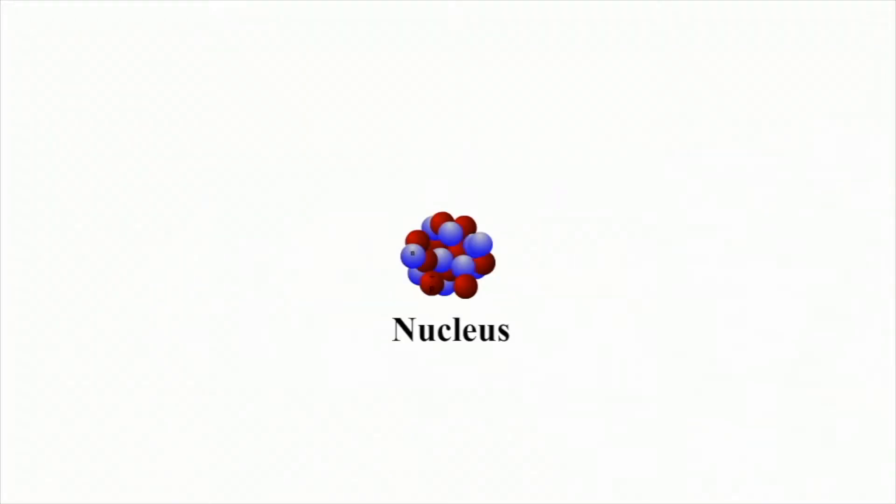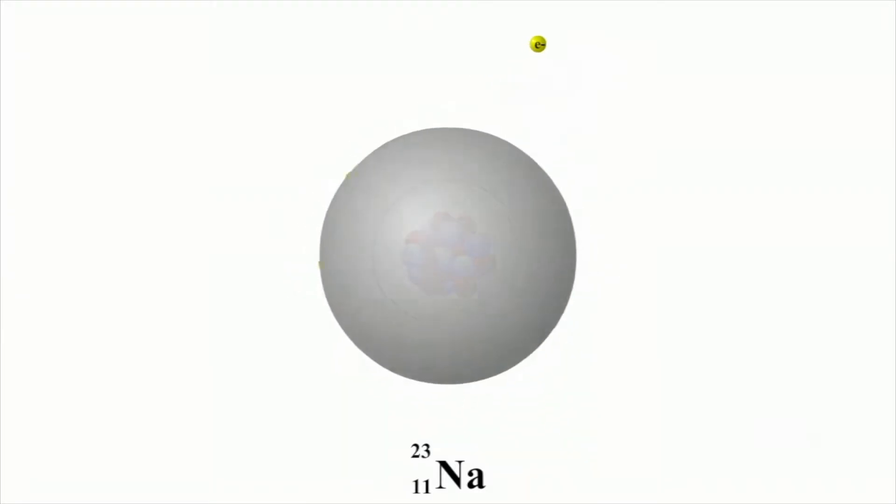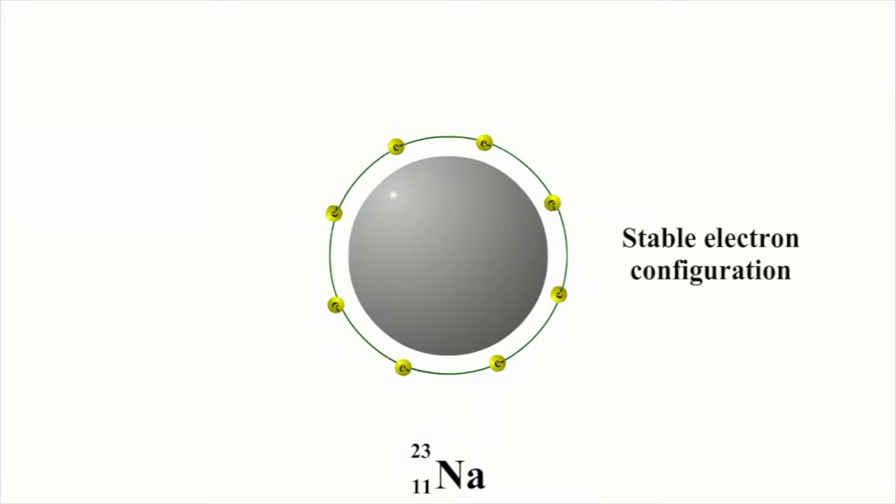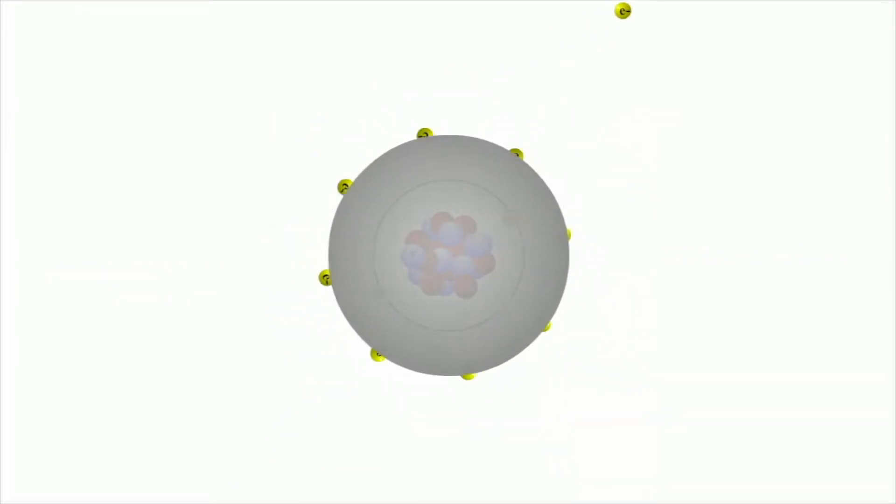Sodium is an alkali metal and has a single valence electron. This electron orbits in the outermost electron shell. The shell needs to lose one electron or gain seven more to reach a stable electron configuration of eight electrons, according to the octet rule. Losing one electron requires less energy than gaining seven, so sodium forms compounds by giving up this single electron.